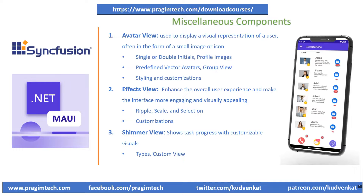A Shimmer effect is a popular UI animation technique that creates the illusion of subtle animated gradients moving across a view, typically used to indicate that content is loading. This effect adds a polished and dynamic element to the user interface, giving the impression that data is being fetched or loaded in the background. Shimmer effects are commonly used in social media platforms, news feeds, and other content-heavy interfaces. These days, traditional loaders and progress bars are being replaced by shimmer effect components.